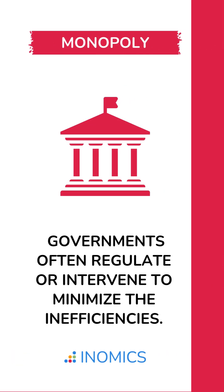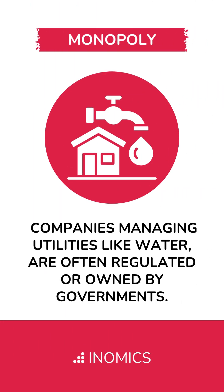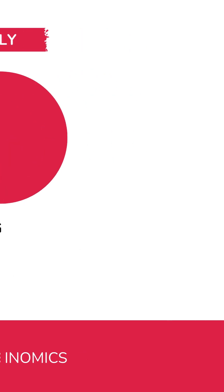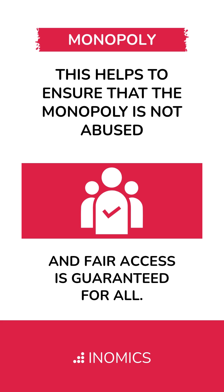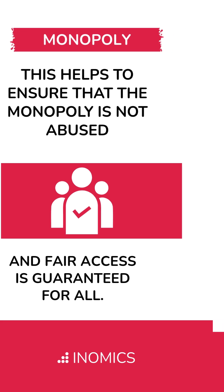Because monopoly outcomes reduce welfare, governments often regulate or intervene to minimize the inefficiencies. For example, companies managing utilities like water — where there is often no alternative supplier and demand is highly inelastic — are often tightly regulated or even owned by governments. This helps ensure that the monopoly is not abused and fair access is guaranteed for all.